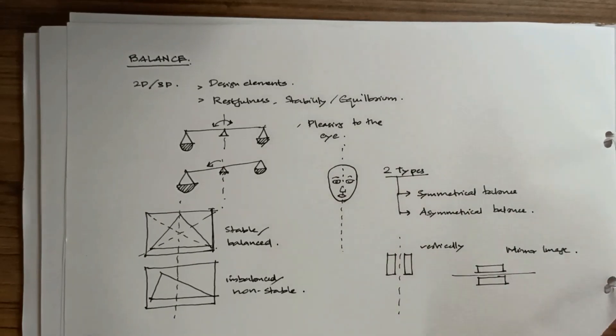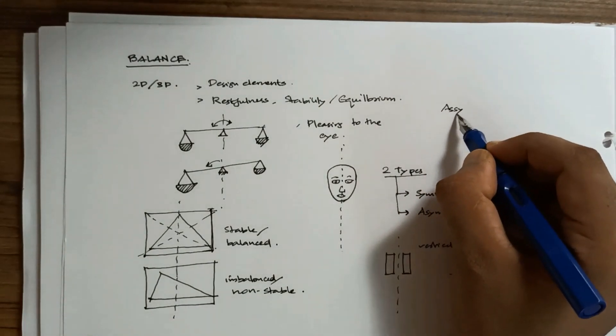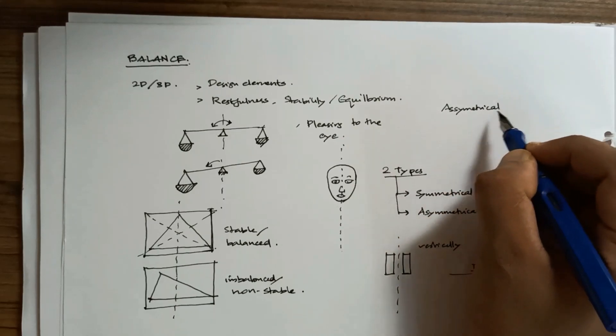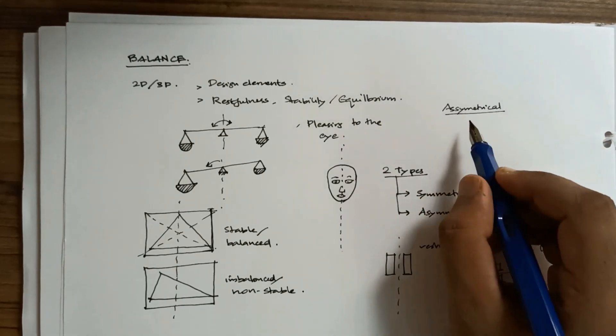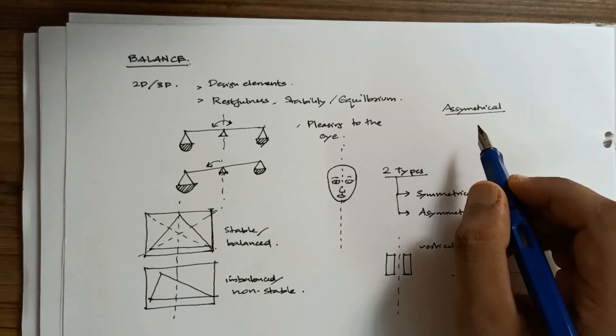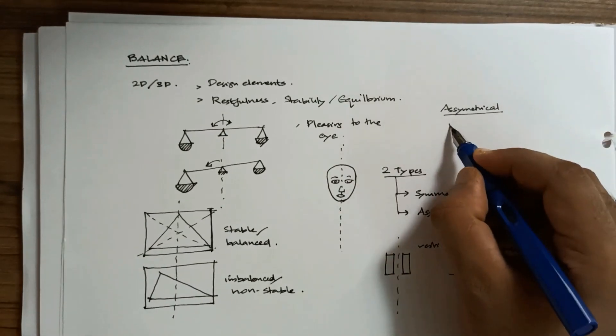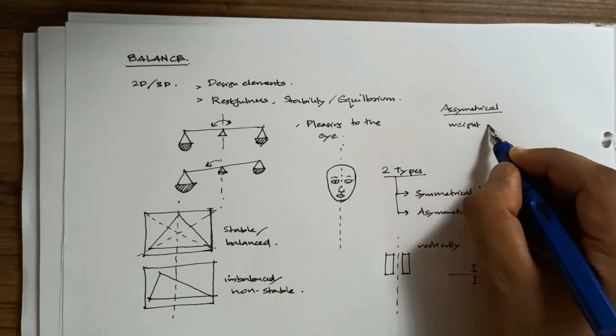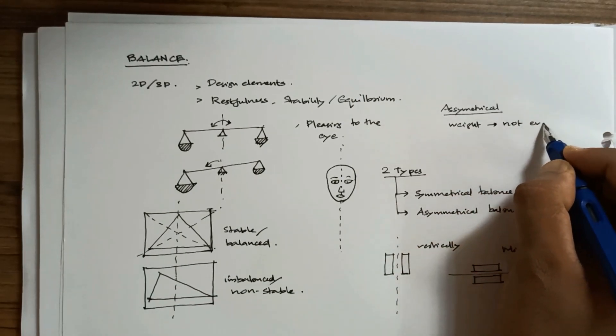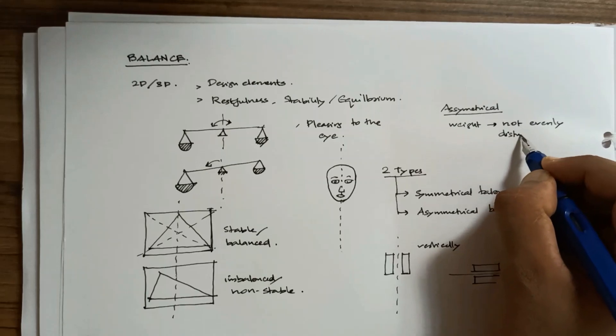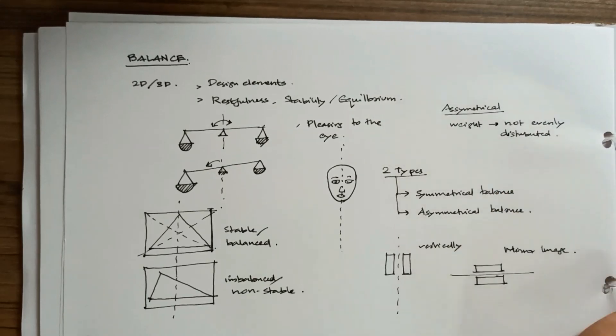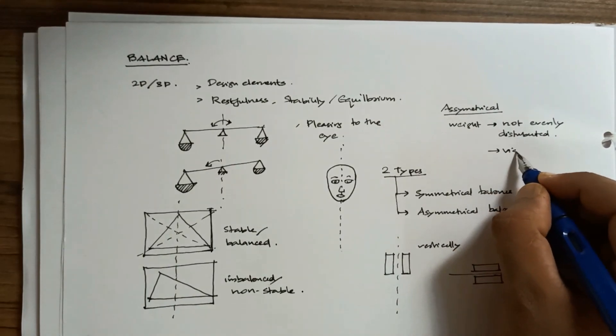What is asymmetrical balance? This is a little bit tricky. We have to pay attention here. In this case, the weight of the composition is not evenly distributed.